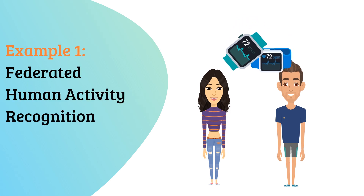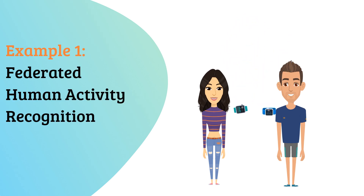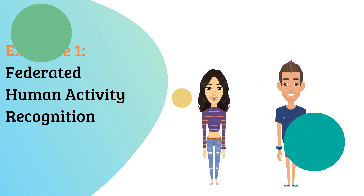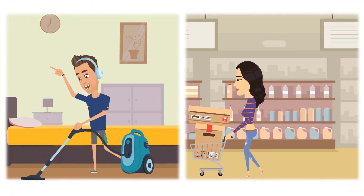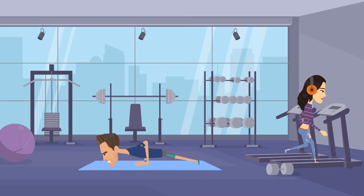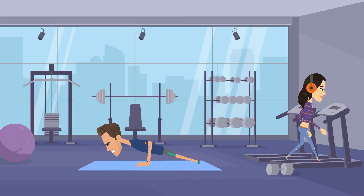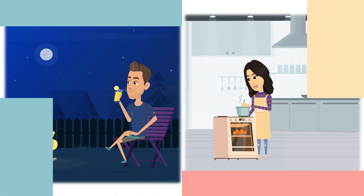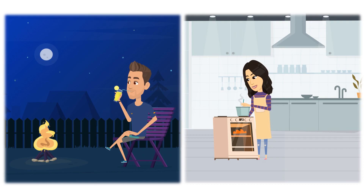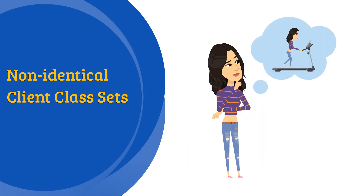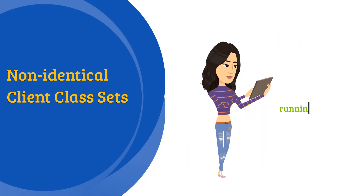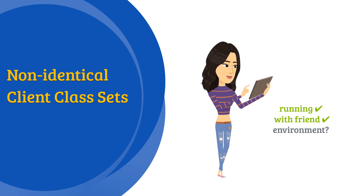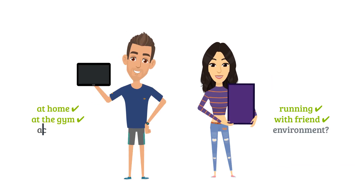For example, a smartwatch company wants to build a human activity classifier. Their smartwatch users could experience almost all types of daily activities in different environments throughout the day. However, users sometimes fail to report labels for every relevant activity or environment, and only report a subset of categories.